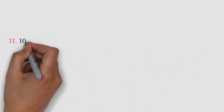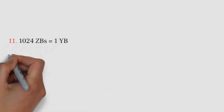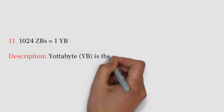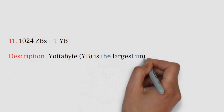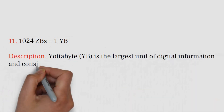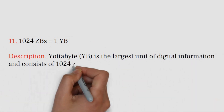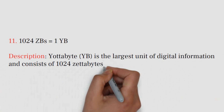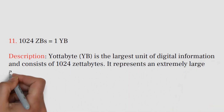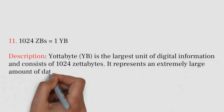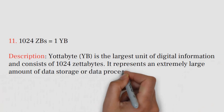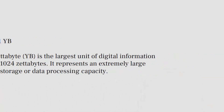Number 11: 1024 ZBs equals 1 YB. Yotabyte (YB) is the largest unit of digital information and consists of 1024 zetabytes. It represents an extremely large amount of data storage or data processing capacity.